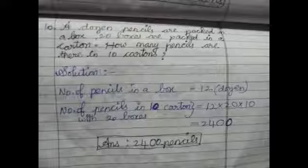In one box, they packed 12 pencils. Like that we have 20 boxes. And 20 boxes joined together, they packed in one carton. Cartons are nothing but a big box which is containing small boxes. Okay children, so we have 12 multiply by 20, multiply by 10.